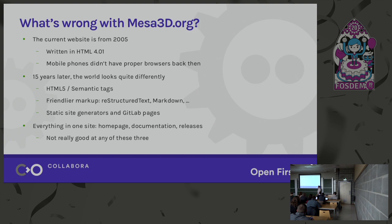Now we're 15 years later and the world has changed quite a bit. We have HTML5 now, and translating the MESA website to that is a little bit of a pain. We have better markup languages and tools, static site generators, GitLab Pages, GitLab CI, and stuff on freedesktop.org that we can use. The thing that bothers me the most when I dig into this is that we're throwing all of the web presence stuff for MESA into one bucket — it's a website that's a jack of all trades, master of none.